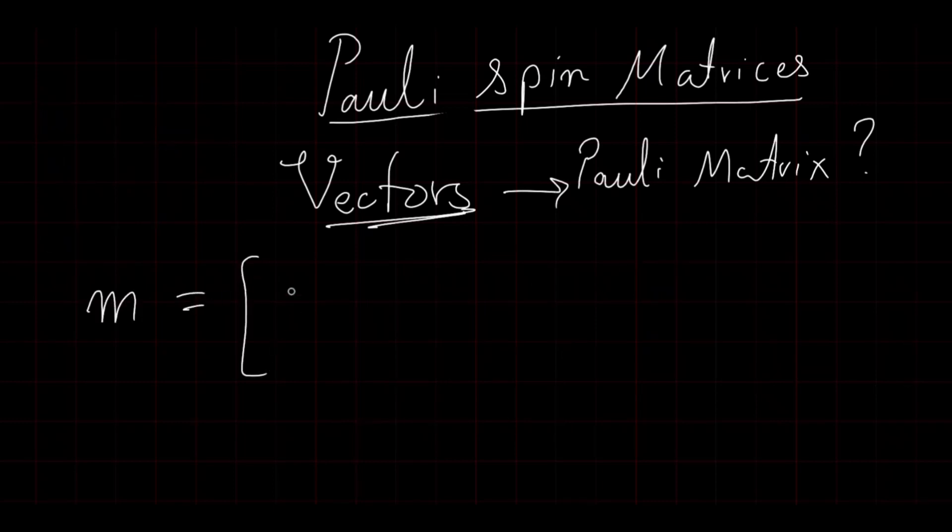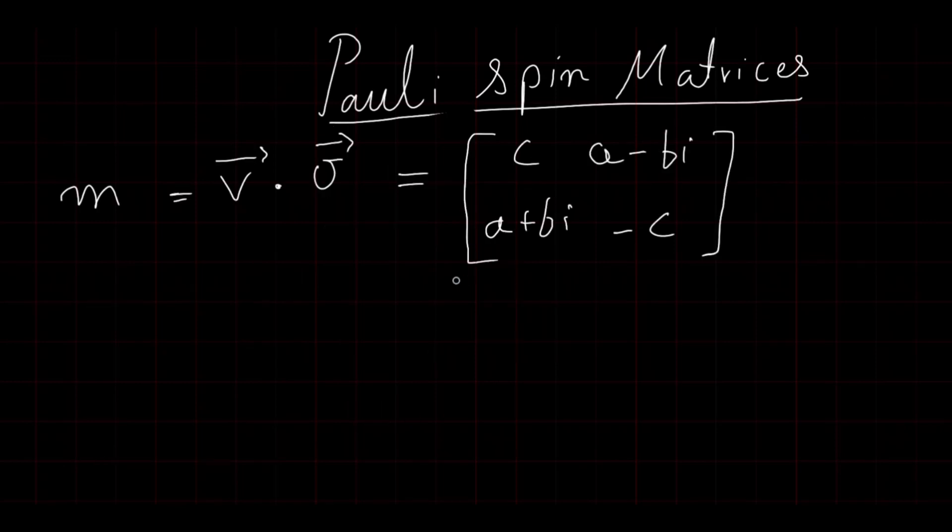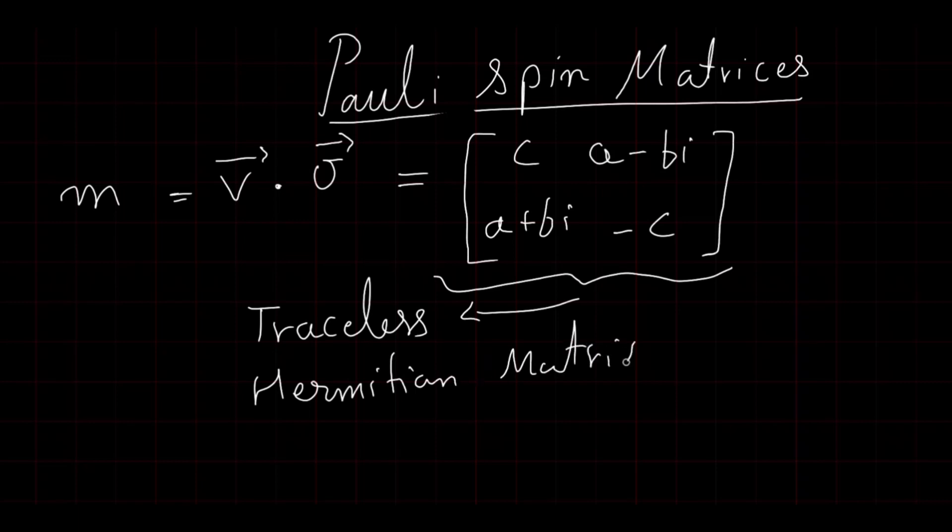Again, taking the compact form, m can be written as a dot product between the vector [a, b, c] and the vector containing the Pauli matrices [sigma x, sigma y, sigma z]. And we can write this vector as just sigma. So m is equal to v dot sigma. v is our 3D vector, and m is its representation in the traceless Hermitian matrix form. A traceless Hermitian matrix is just a special name given to the matrix which has the diagonal components are real, and the traceless means that the diagonal component sum is equal to 0.